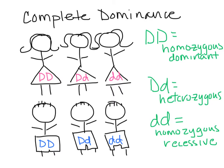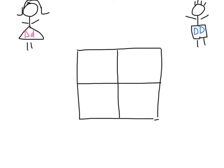Well, let's take a look. Here's mom: big D, little d — she's heterozygous. Here's dad: big D, big D — homozygous dominant.